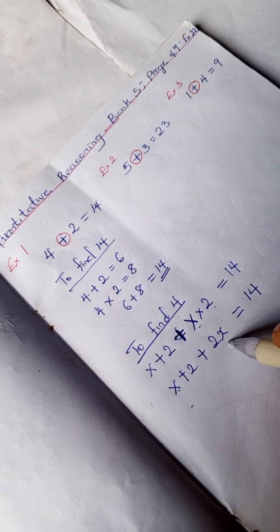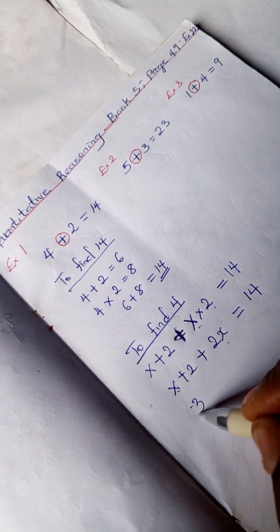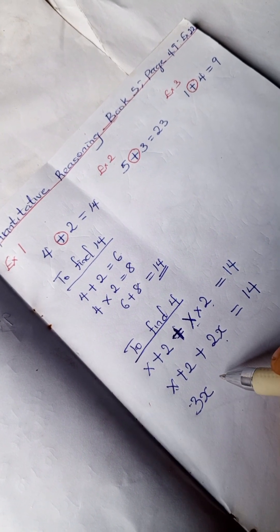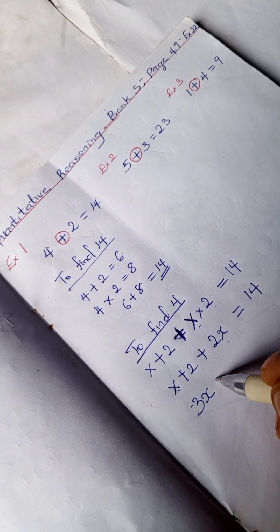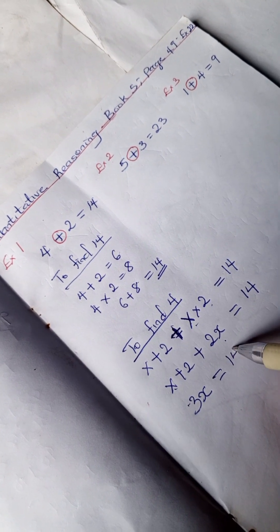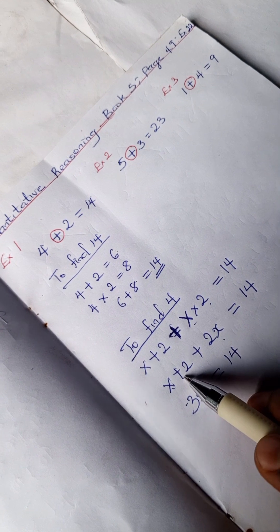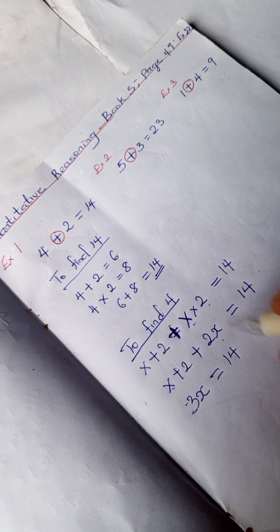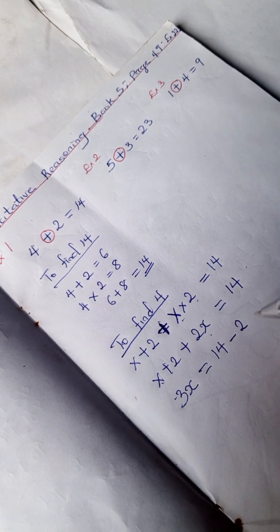x plus 2x equals 3x, which equals 14. We're going to move this plus 2 over to this side, and it becomes minus 2.